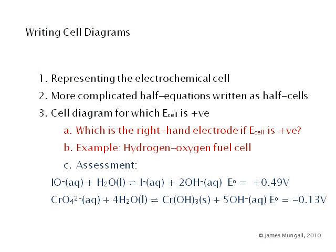Welcome to this third part of the tutorial on writing cell diagrams. Hopefully if you've had a look at the first two where we represent the electrochemical cell and look at some more complicated half equations, now onto the third and final part in which we're working out how you would write the cell diagram for which E cell is positive, having been given a couple of half equations.